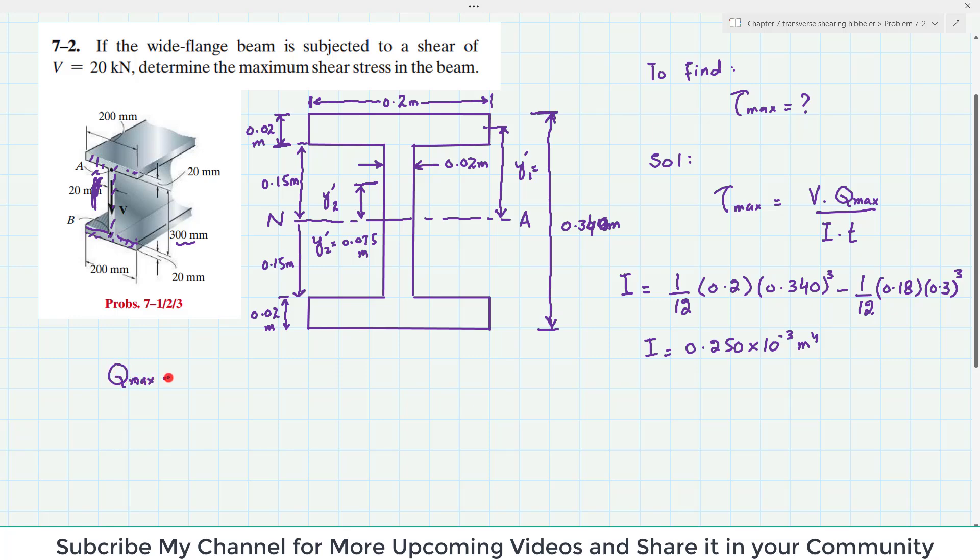Now we will find Q max and Q max is equal to sum of Y dash bar into A dash. And Q will be calculated from the neutral axis.